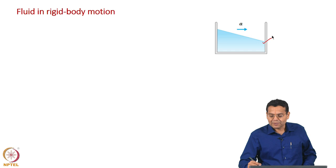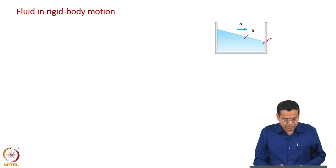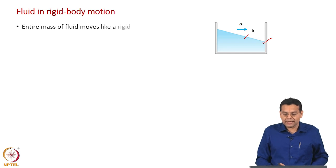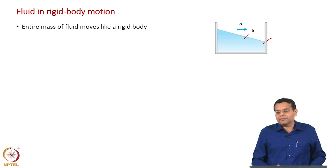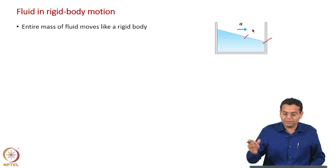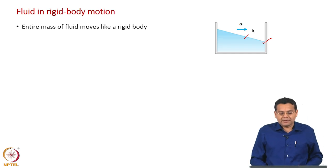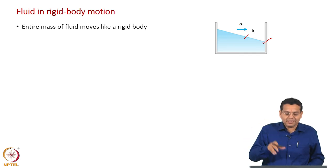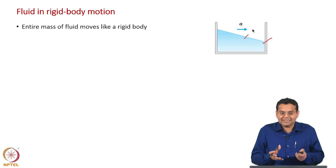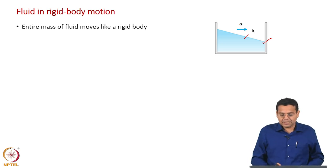We are interested in the shape of the free surface. The entire mass of fluid moves like a rigid body — that is the definition. We have discussed rigid body when we discussed strain for solids, and strain rate for fluids, and we said rigid body motion includes translation and rotation; they do not contribute to viscous stresses. Now the time has come where we can really understand and have a practical example.